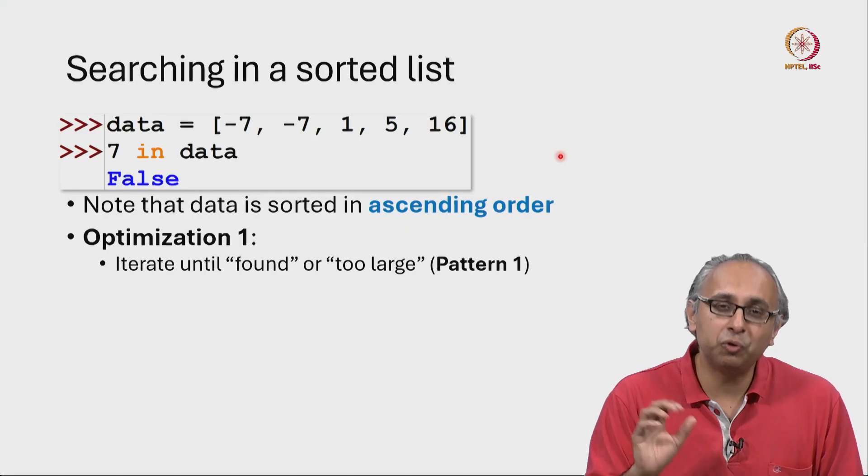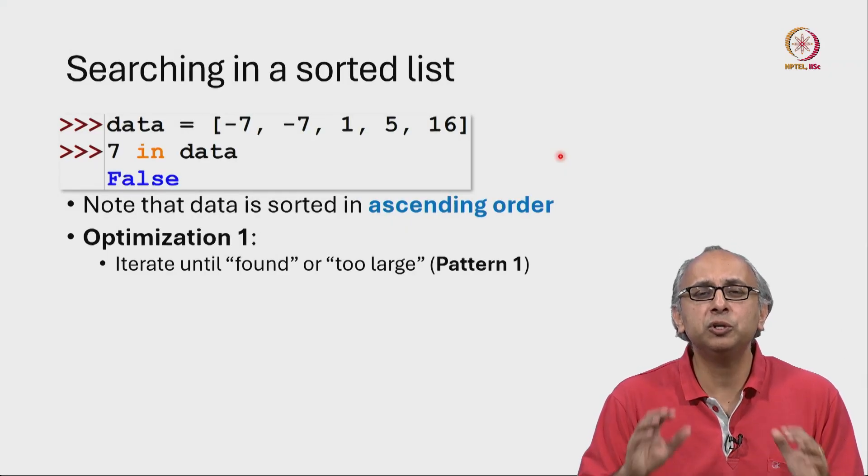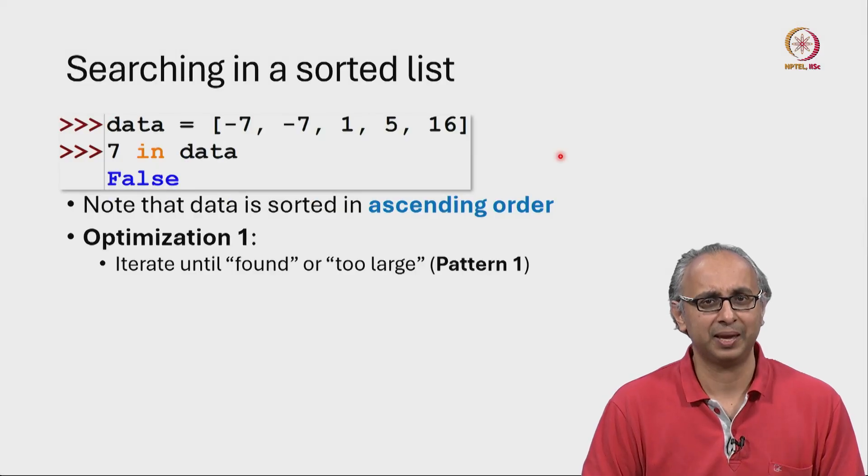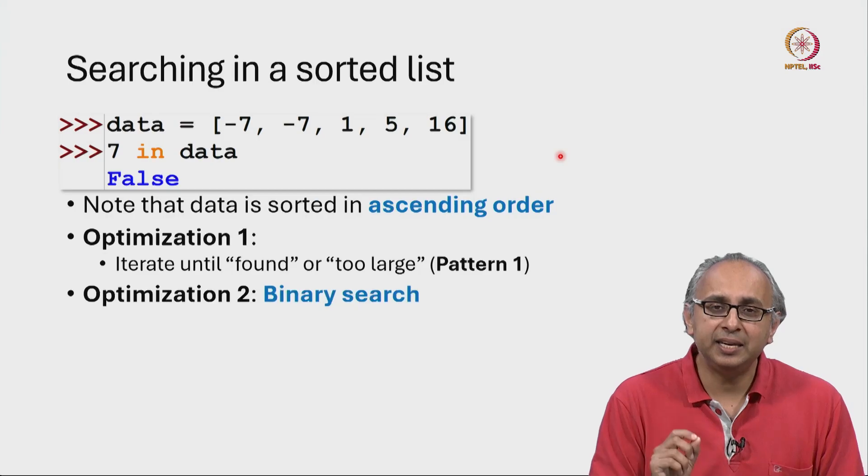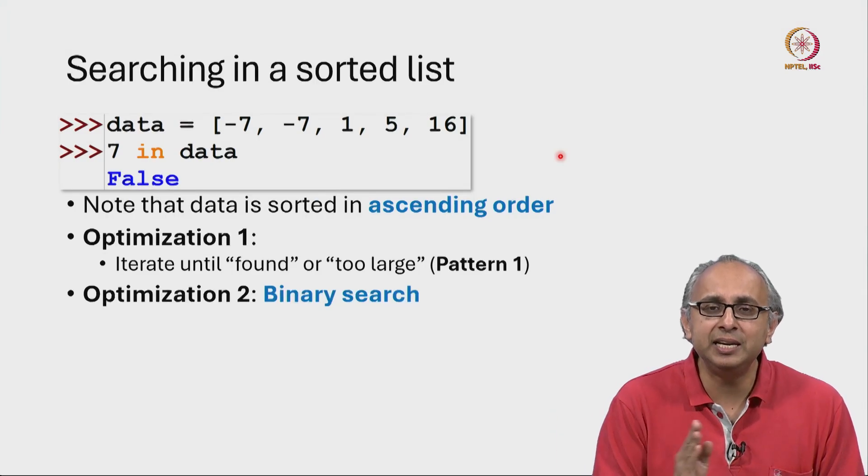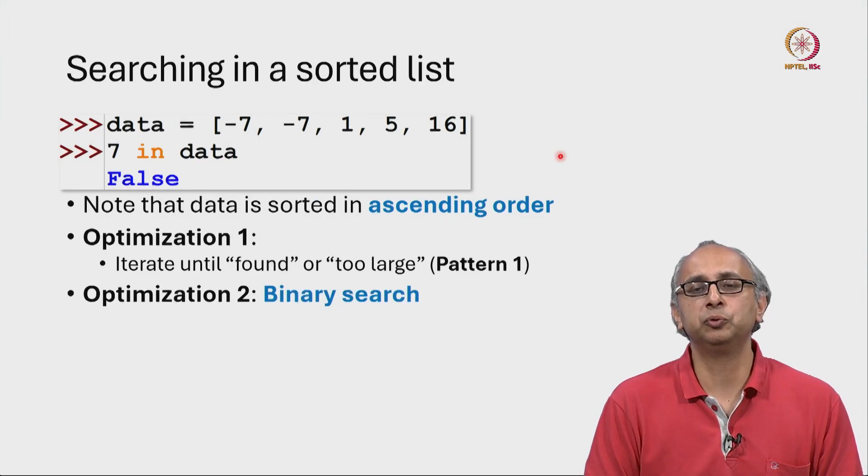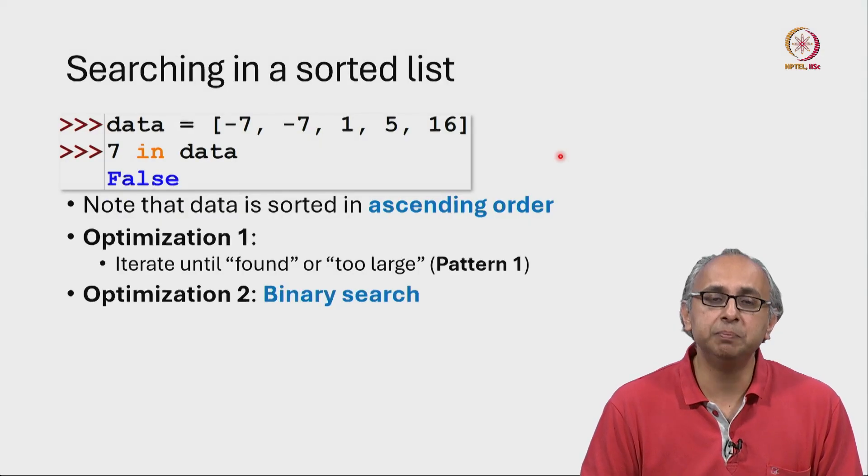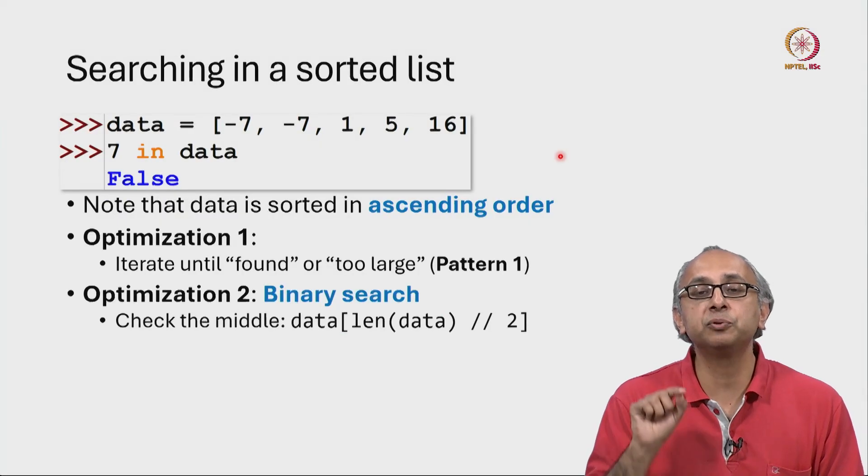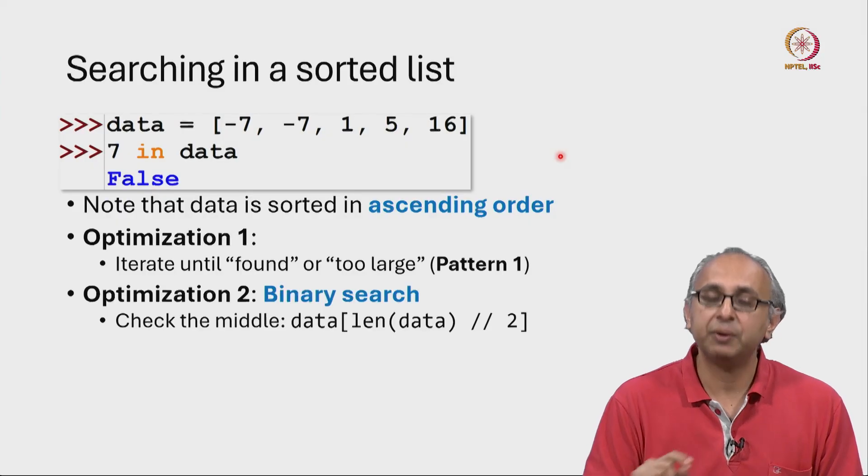But if you know the list is sorted, you can do much better than this, and that idea is called binary search. So the idea is we are no longer going to do a linear scan through this list. Instead, what we are going to do is immediately jump into the middle of this list. Now in this example,